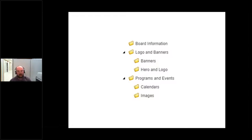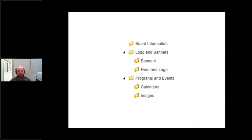You could also reverse this idea and have several topic folders, then separate them again by media type. In this demo folder we have a different structure: board information which will mostly be documents or PDFs, logos and banners which are likely images, and for programs and events you may have both — so this is a bit of a hybrid structure. In the calendars folder you could have PDF or JPEG. The best structure is going to be the one that works for you and your library. Both ideas I've shown are based on what I regularly see on YRL member library sites, but you are the best judge of what works for you. Now let's talk about naming conventions.